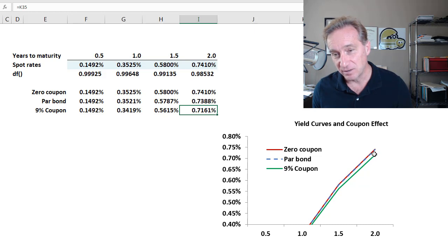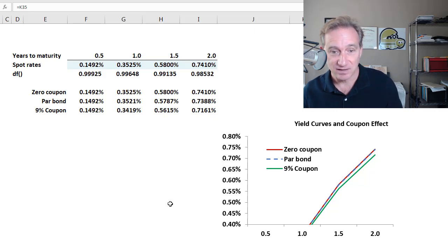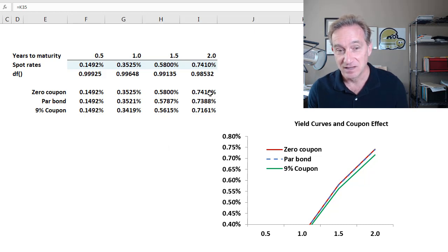And we can see the truth of that, the yield curve or the yields to maturity implied by each of these bonds given the same spot rate term structure is slightly different. My zero and par, my zero is the highest, my par is pretty close, and then my 9% coupon bond, its yield curve is slightly less. And so this gets back to the point that the yield, if we just go out here to the two years, we can see the yields on this vary. The yield that we get depends on the bond's cash flows.